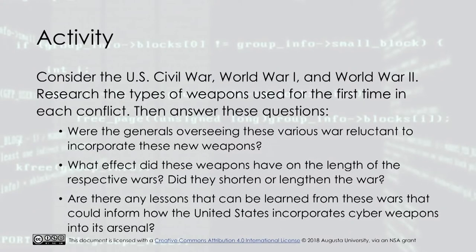The activity for this module asks that you consider the U.S. Civil War, World War I, and World War II. Research the types of weapons used for the first time in each conflict. Then answer these questions: Were the generals overseeing these various wars reluctant to incorporate these new weapons? What effect did these weapons have on the length of the respective wars? Did they shorten or lengthen the war? Are there any lessons that can be learned from these wars that could inform how the United States incorporates cyber weapons into its arsenal?